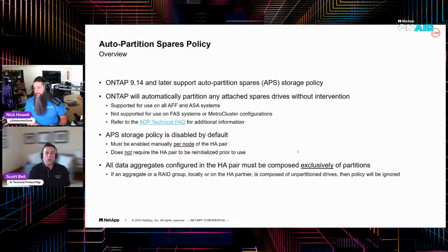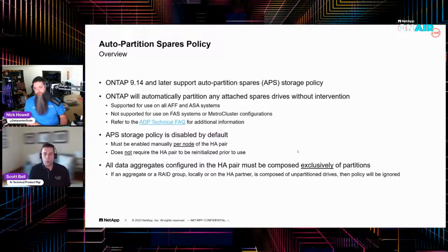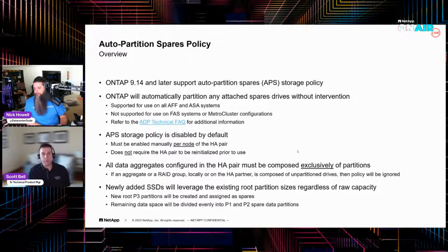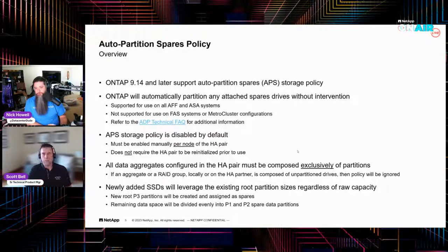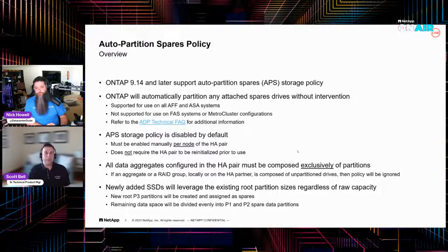Here's another one of the conditions: all the data aggregates configured in the HA pair must be composed exclusively of partitions. So if you have an aggregate or RAID group that has whole or unpartitioned drives, the policy is going to ignore it. But if you do have it enabled and all your aggregates and RAID groups are composed of nothing but partitions, then it's going to slice and dice those regardless of the raw capacity of the drive — whether you have a shelf of 960s, 3.8s, or 7.6s. It's going to do it, because the root partition is the factor that determines how much to cut off the top before evenly dividing the remaining space.